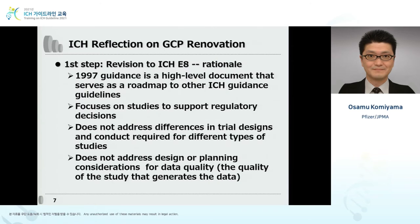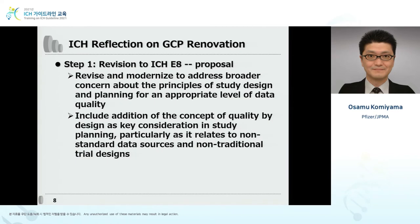The first step of GCP Renovation is revision to ICH E8. The E8 guideline, originally agreed in 1997, is a high-level document that serves as a roadmap to other ICH guidelines. E8 focused on studies to support regulatory decisions and did not address differences in trial design and conduct required for different types of studies, nor did it address design or planning considerations for data quality. E8R1 was revised and modernized to address broader concerns about the principles of study design and planning for an appropriate level of data quality.